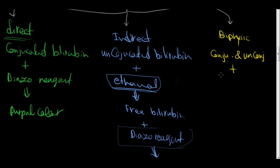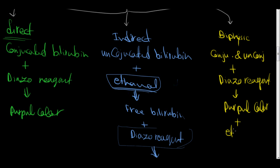First, we will add the diazo reagent and that will give us a purple color. And then we will add ethanol and after adding the ethanol, we will see an increase in the intensity of the color.